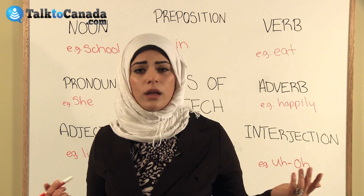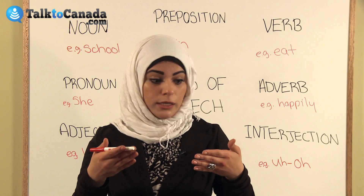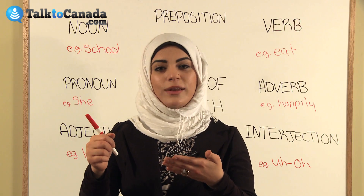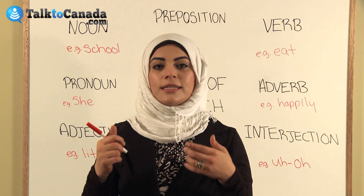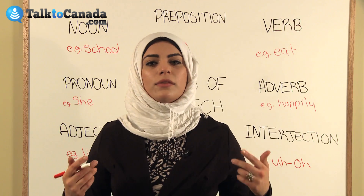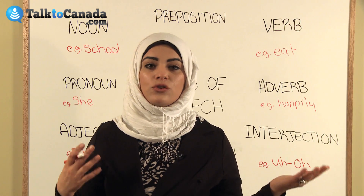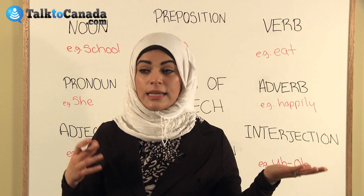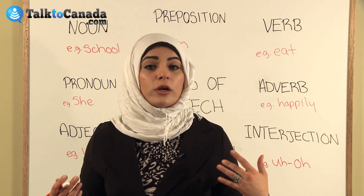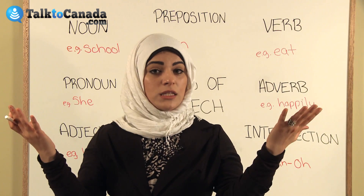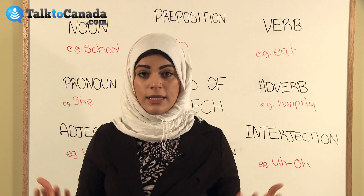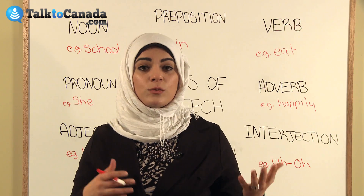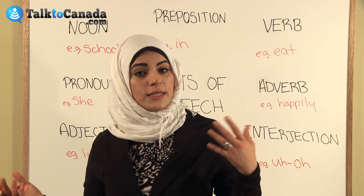If we want to learn English, we need to read, we need to practice writing, and we need to practice speaking. Now the different and separate parts of a tree are the same thing as the different and separate parts of speech. For a tree to look the way it does, we need to put a lot of its parts together. To make sentences and paragraphs, we need to put different types of words together.